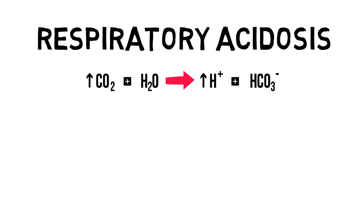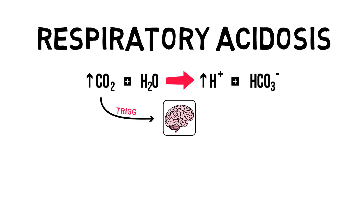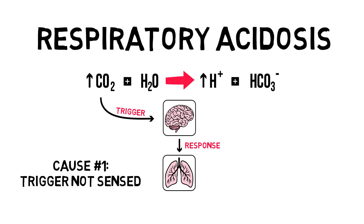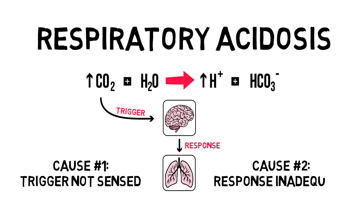In normal physiology, when our CO2 levels rise, our respiratory center triggers us to start breathing. So an elevated pCO2 is an indication that that's not possible, either because our respiratory center can't be triggered in central nervous system depression, or because we can't physically breathe. Let's break these down.